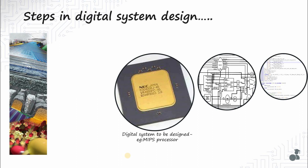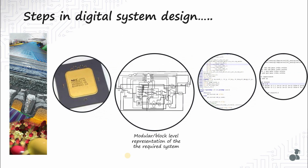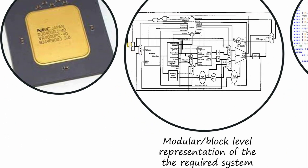Here I have taken the example of the MIPS processor, whose variants are present in Tesla Model S cars for lane detection, in Sony PlayStation, and in many more products. The first step in designing any digital system is to create the block diagram of its architecture. You can see the processor architecture of the basic MIPS processor to give you an idea. The major components of any processor are the program counter, the register file, the ALU, the control unit, and there are many more components.